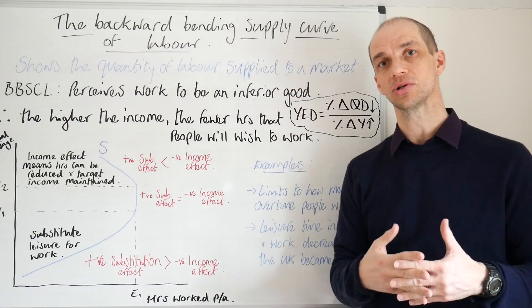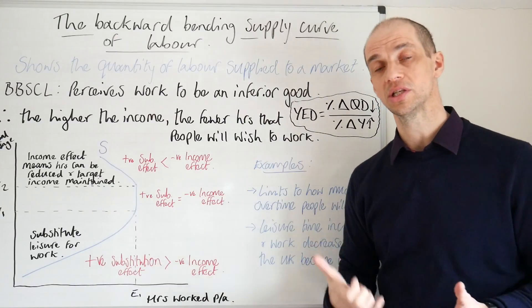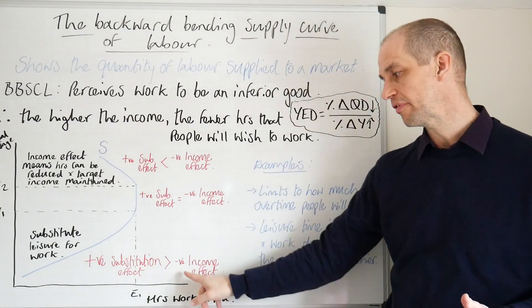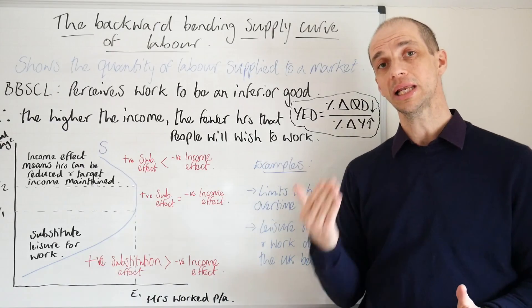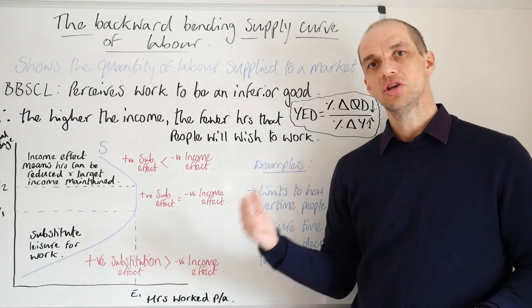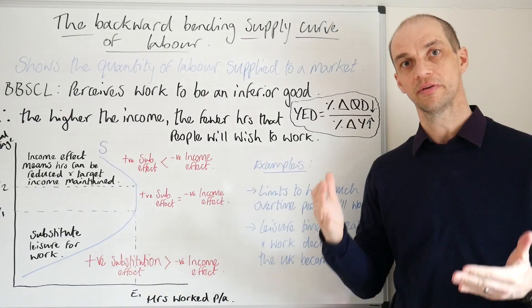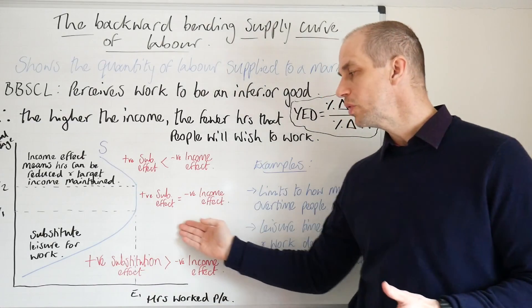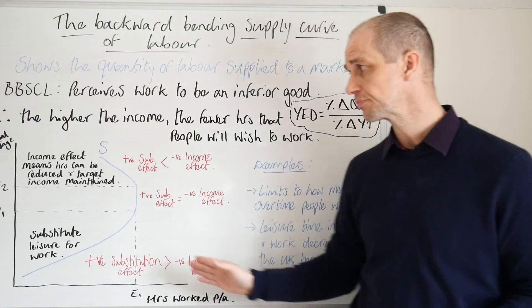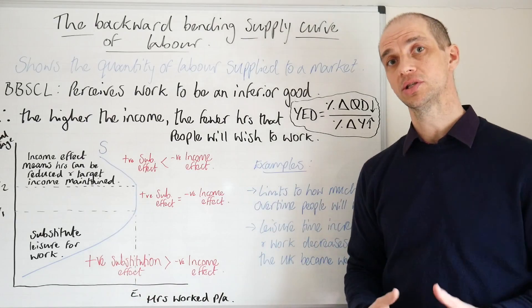In essence, the opportunity cost of using your leisure time to not work is really growing, and there is an increased incentive to actually start working more hours. However, what happens then is that you have this negative income effect, but that income effect is likely to be fairly small initially. The income effect really starts to kick in when you reach a target level of income — perhaps you've said this is how much income I would like to achieve, or this is where I'd like to be in terms of the number of hours I wish to work. We see this point achieved where there is parity between the positive substitution effect and the negative income effect, and at these levels the worker is now unwilling to actually increase the number of hours supplied to work.